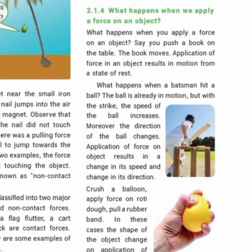For example, when a batsman hits a ball, the ball is already in motion. When he hits and strikes, the speed of the ball increases. Moreover, the direction of the ball also changes. So applying a force on an object results in a change in speed and a change in direction.